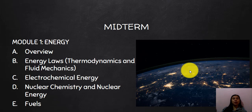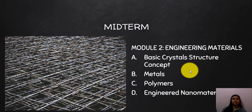Module one covers topics all about energy. We will start with an overview, followed by energy laws covering specific topics in thermodynamics and fluid mechanics, then electrochemical energy, nuclear chemistry and nuclear energy, and fuels. Module two is about engineering materials — we will learn basic crystal structure concepts, metals, polymers, and engineered nanomaterials.